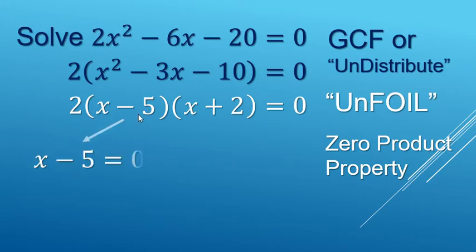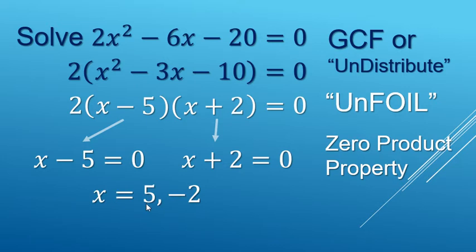But x minus 5 could equal 0, or x plus 2 equals 0. If this is the case, we add 5 to both sides, and we have x equals positive 5. Here we would subtract 2, and we'd have x equals negative 2 for the solution there.